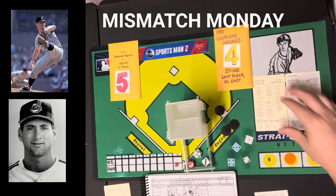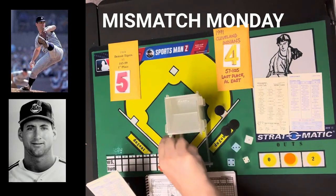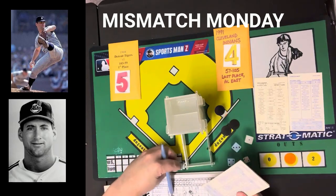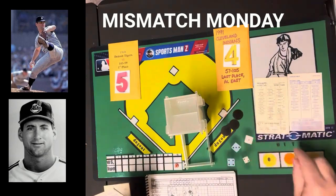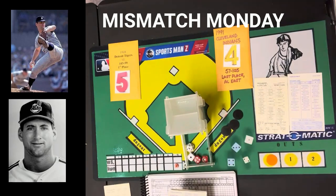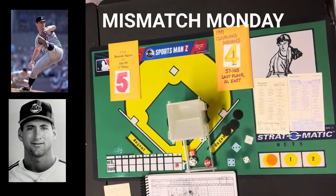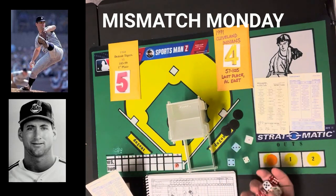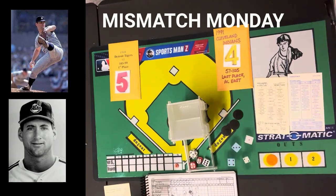Don McMahon comes in relief of Denny McLain. McMahon in 1968 was 5-2 with a 1.98 ERA, allowing only 53 hits in 82 innings. Baerga gets a 1-5 — strikeout. Albert Belle gets a ground ball to third — out 5-3. Carlos Martinez gets a 4-10 — ground ball to third; third baseman rated 1, roll of 20 gives 'roll again,' roll of 16 — out. That's the game.